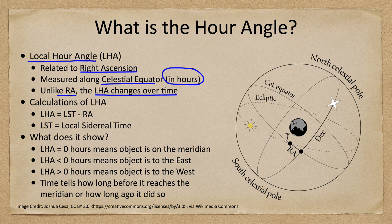We've looked at various coordinate systems. We looked at altitude and azimuth, where both values constantly change over the course of a day. We also looked at the equatorial coordinate system, in which the coordinates never change due to the motion during the course of a day. With the local hour angle, the declination remains the same, but the hour angle changes.